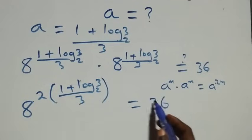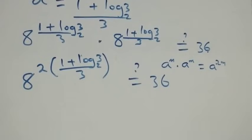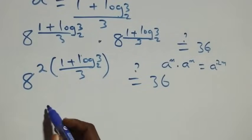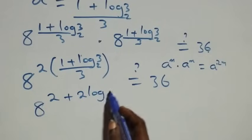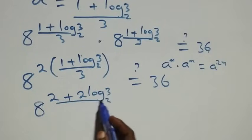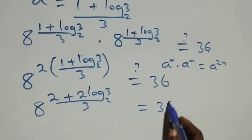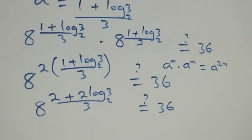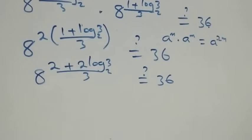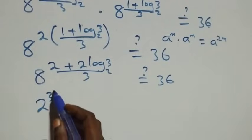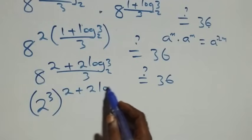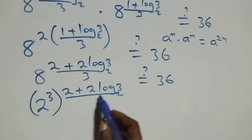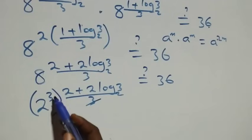Since we have the same base multiplying, the powers add and we get 8 raised to power 2 times (1 plus log 3 base 2 over 3). The next step: this power multiplies the bracket, and we can write this as 8 raised to power (2 plus 2 log 3 base 2) over 3. We can express 8 as 2 raised to power 3, which is then raised to power (2 plus 2 log 3 base 2) over 3, and the 3s cancel.